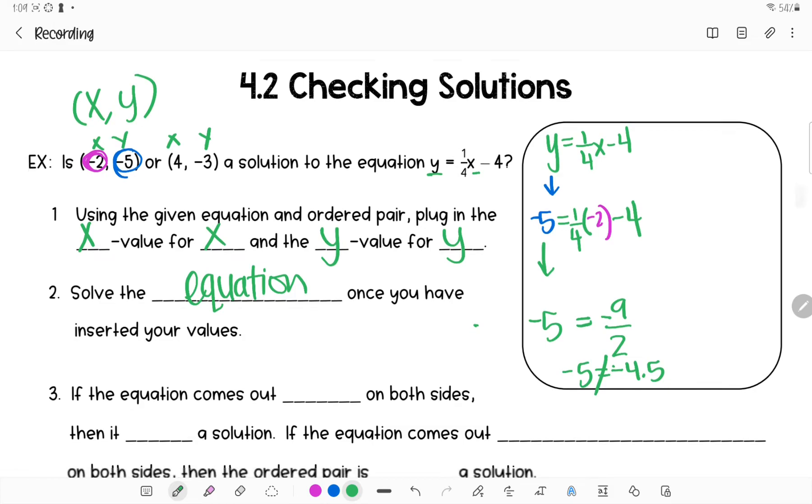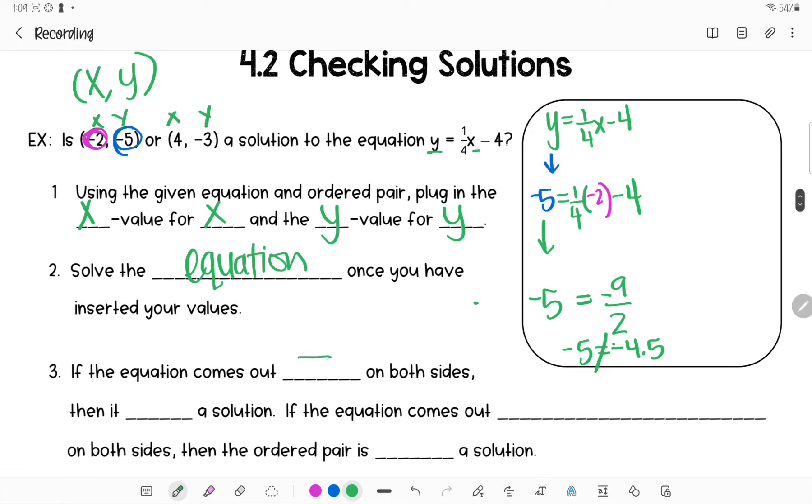What that means is if the equation comes out equal on both sides then it is a solution. In other words, this line, if I were to graph this, is never going to go through this point negative 2, 5. It gets close but it doesn't go through it.